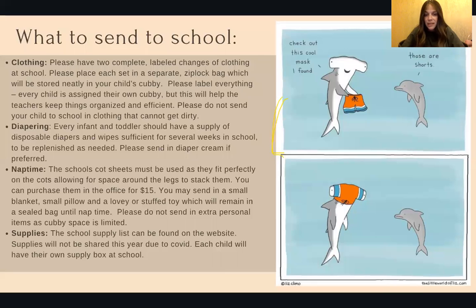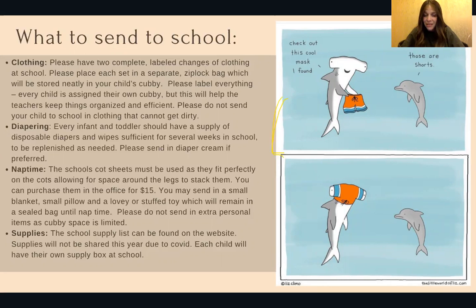You can also send a small blanket — not the blanket off your child's bed, because that won't fit in the cubby. We need a very small blanket and a small pillow — think airplane-size pillow, not a full bed pillow — just for nap time. We store everyone's sheet, blanket, and pillow in a big Ziploc bag in their cubby to keep things hygienic. If you send in giant items, they're very hard to store and don't fit properly. You can also send a stuffed animal needed for nap time.